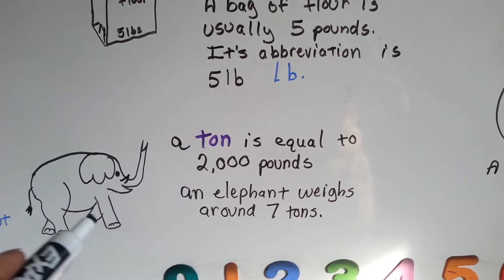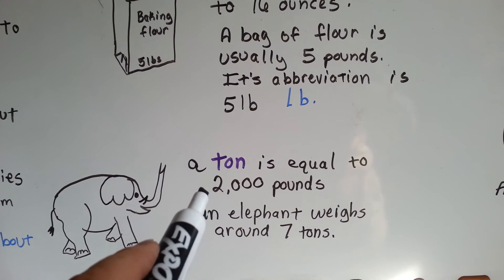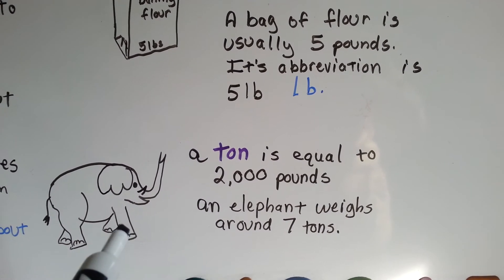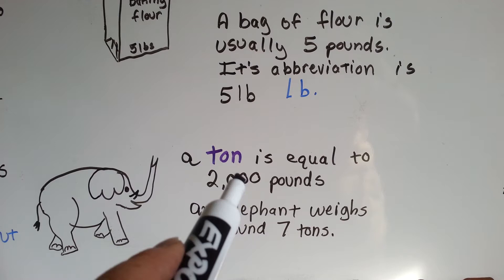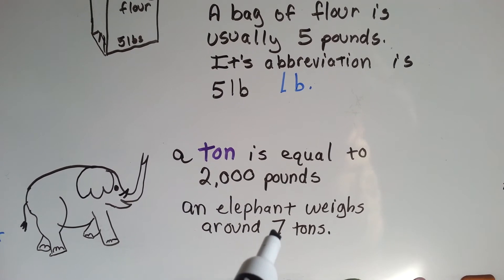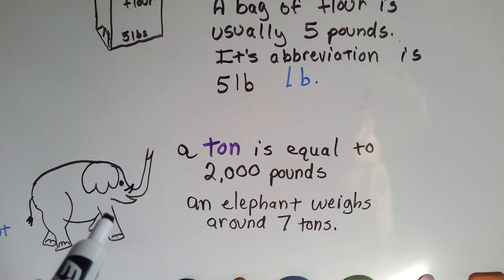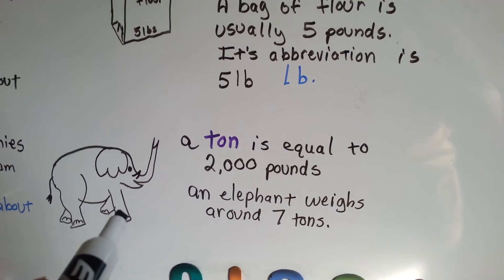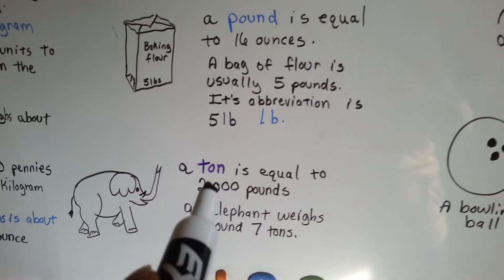A ton is equal to 2,000 pounds. An elephant weighs around 7 tons. So if there's 2,000 pounds in a ton, 2 times 7 is 14. That's 14,000 pounds that an elephant weighs. He weighs a lot more than I do.